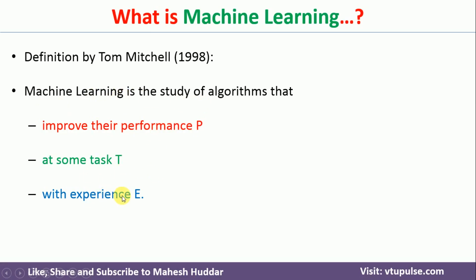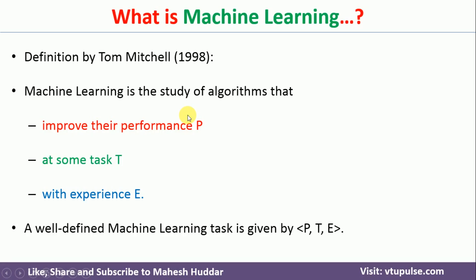Initially, when you provide some set of experience for a given task, the performance may be X. As and when you go on giving more and more experience to that particular algorithm, the performance will go on improving from X to X+1, X+2, and so on. If it goes on improving, then you can say that the machine is learning, otherwise the machine is not learning. This is one of the famous definitions given by Tom Mitchell.